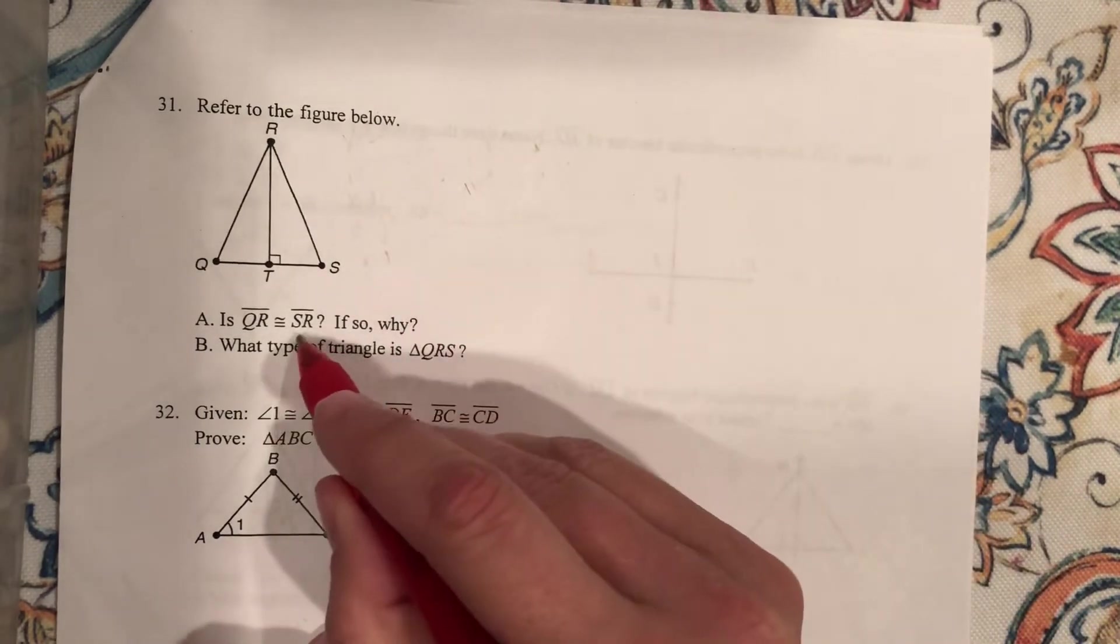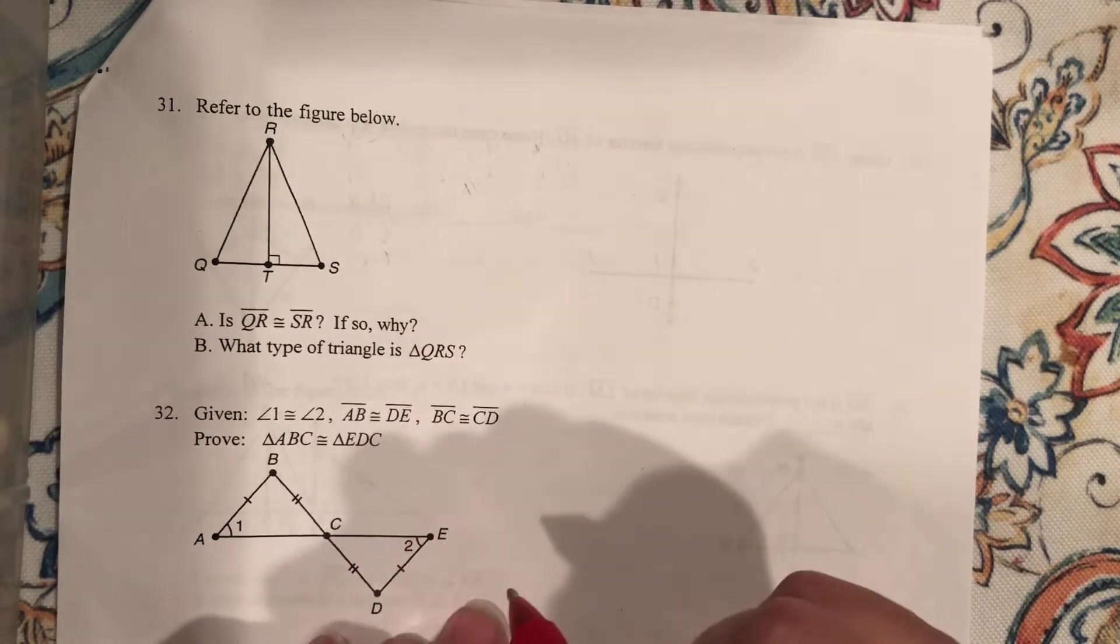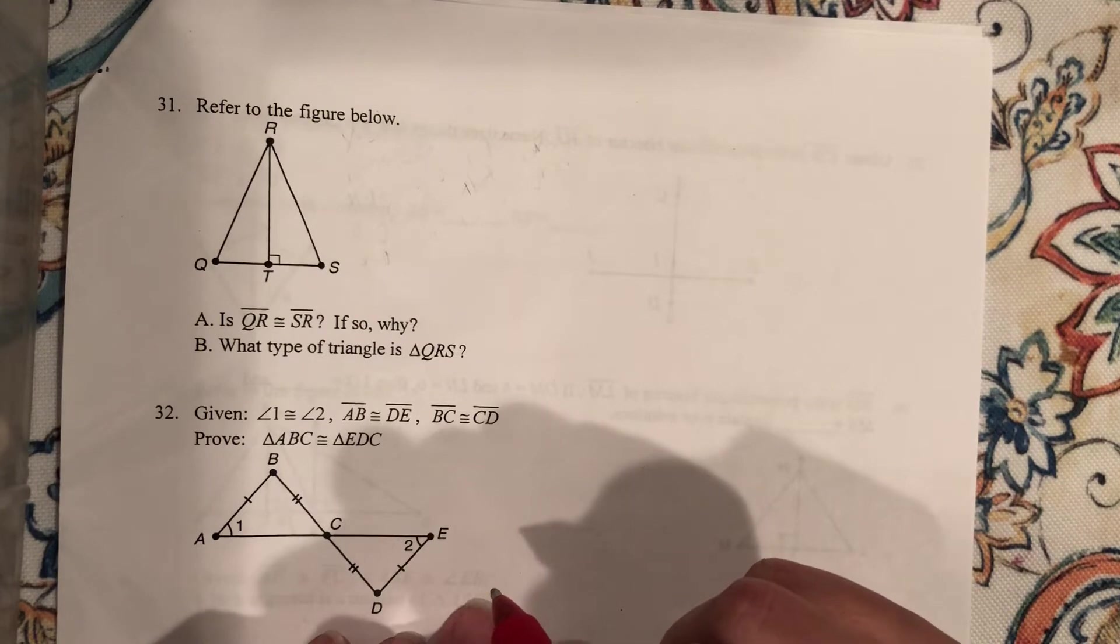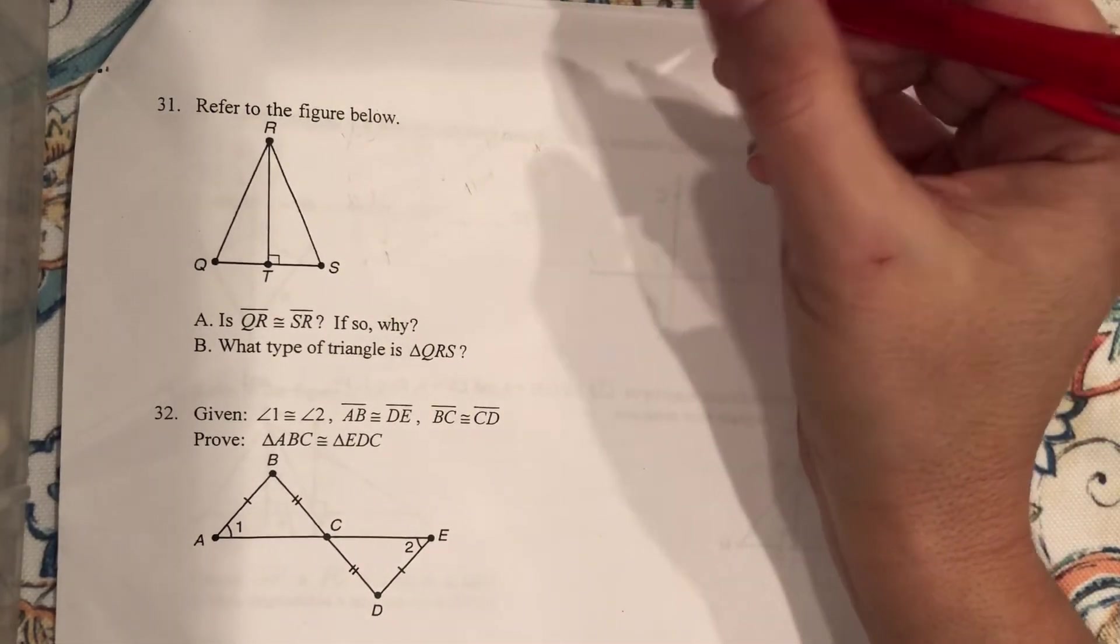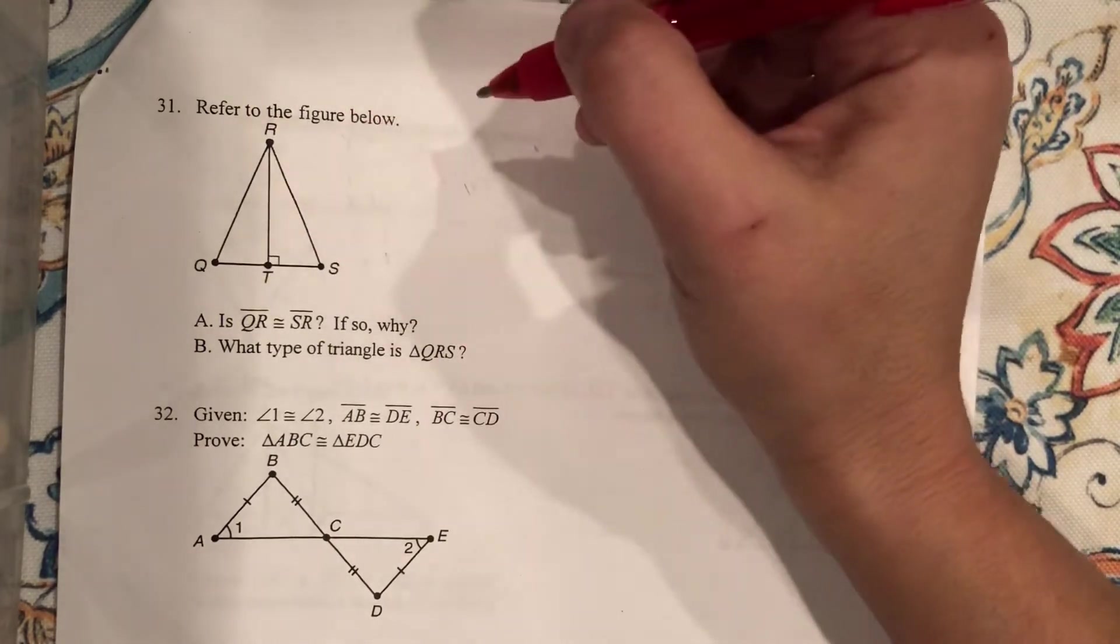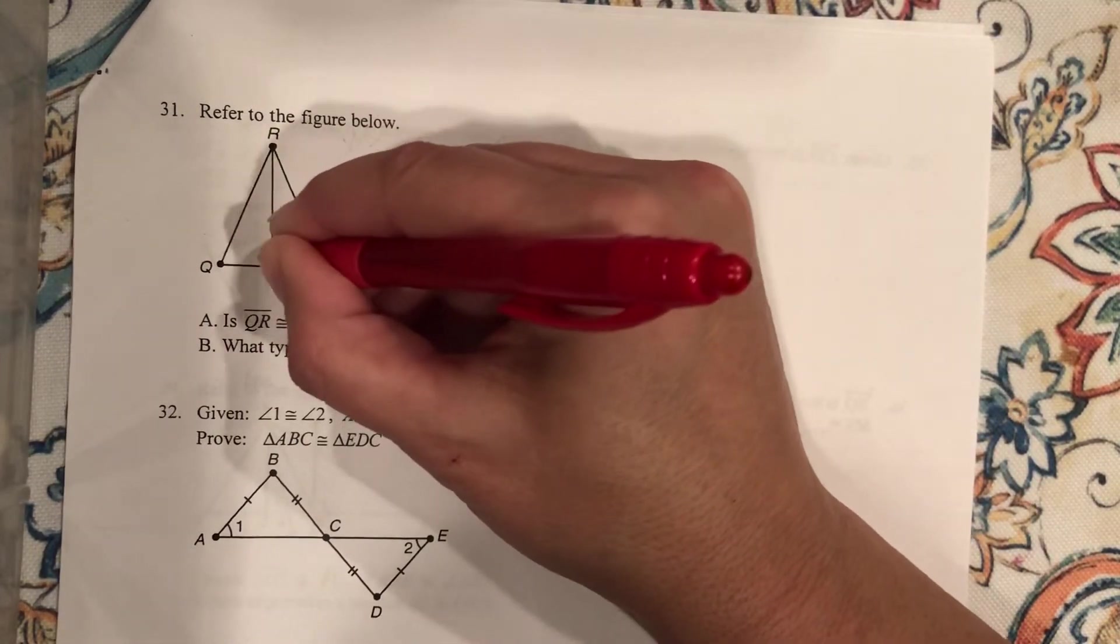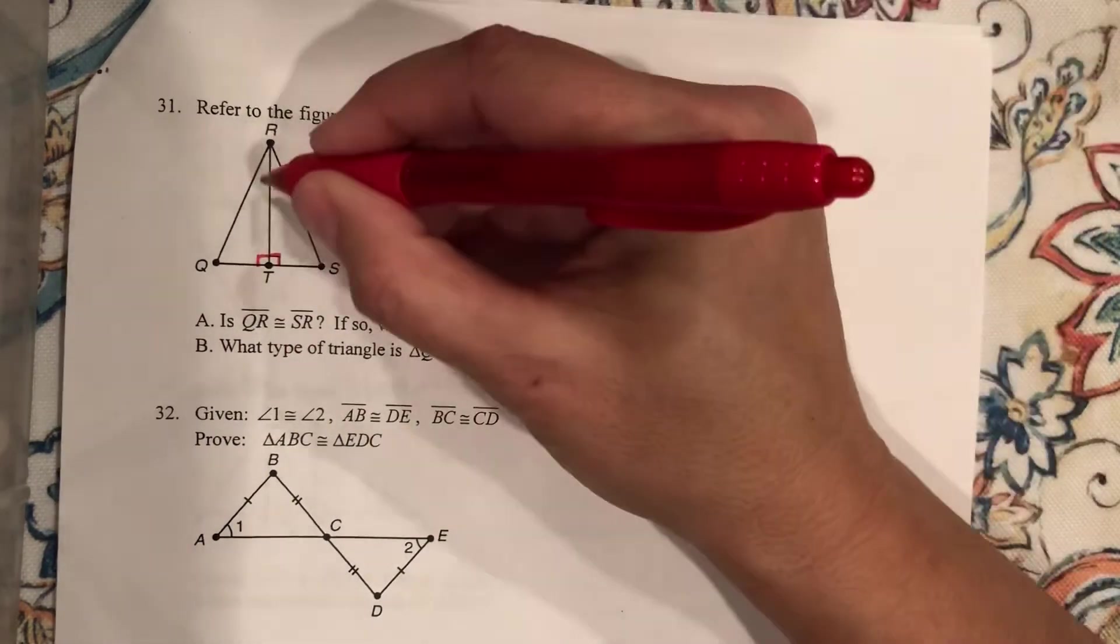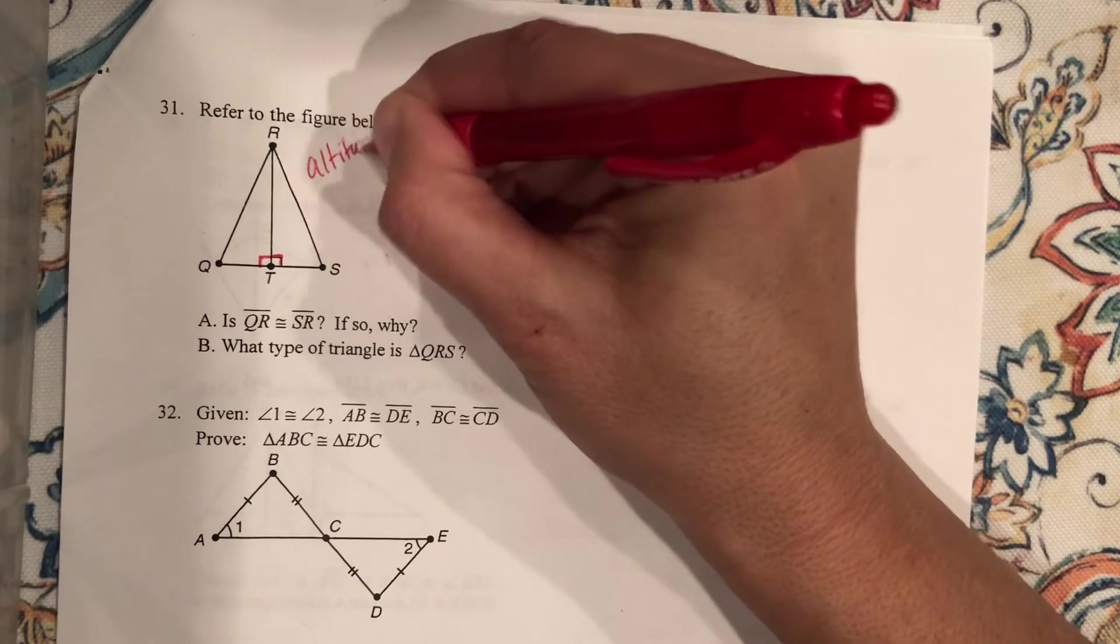Is QR congruent to SR? If so, why? Okay. What type of triangle is QRS? Okay. Let's think about this. What can we tell from the picture? I've got me a right angle, and I've got me a right angle, right? So I know RT is an altitude. Let's use fancy-schmancy work. That's an altitude, right?